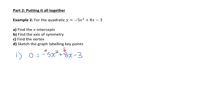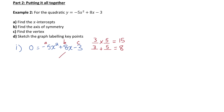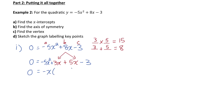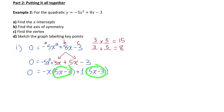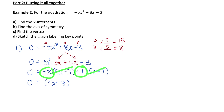The a value is negative 5, b is 8, and c is negative 3. Since a is not 1, I'll factor by decomposition — finding numbers with a product of a times c, which is negative 5 times negative 3 equals 15, and a sum of b equals 8. The numbers are 3 and 5. I split the middle term into 3x plus 5x, then factor by grouping. From the first two terms I take out negative x, giving 5x minus 3. From the last two terms I factor out 1. I then common factor out the binomial (5x minus 3), leaving negative x plus 1 as the other factor.